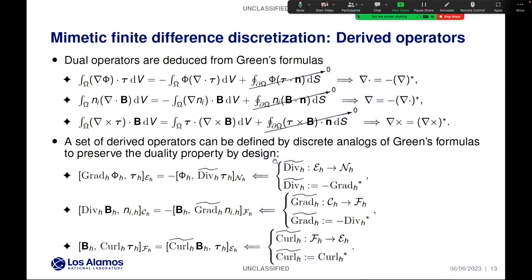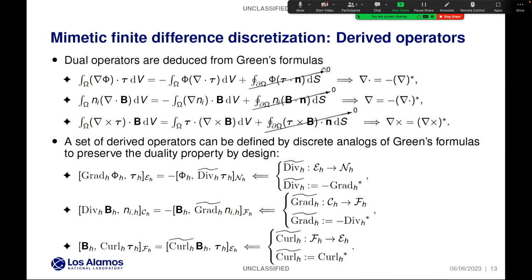That's for the primary mimetic operators. Now let's see how derived mimetic operators are defined. To simplify the presentation, we just consider Green's formulas on functional spaces where the boundary integrals are equal to zero. We have three formulas on top from which we can deduce a set of dual operators with respect to the primary operators. The duality is with respect to the L2 product. For example, minus gradient in duality with divergence, minus divergence in duality with gradient, and the curl in duality with itself.